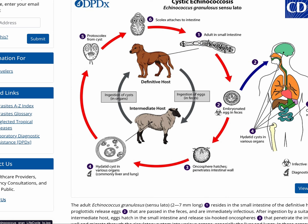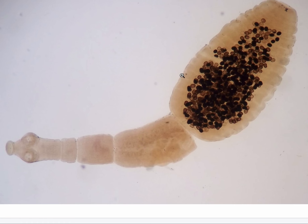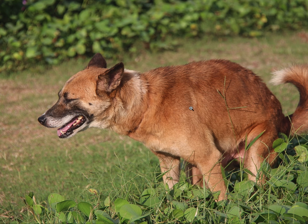Let's take a closer look at the adult form. The head, or the scolex, has four suckers as well as hooklets. They have three segments: the immature segment, the mature segment, and the gravid segment. This is where the eggs are released. On average, there are give or take 800 eggs, and this is released when a dog defecates.